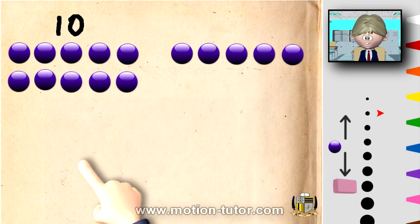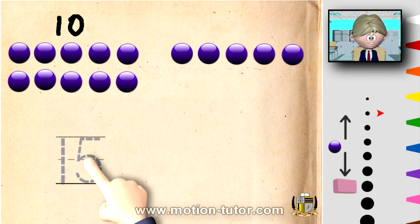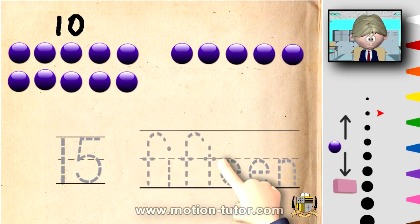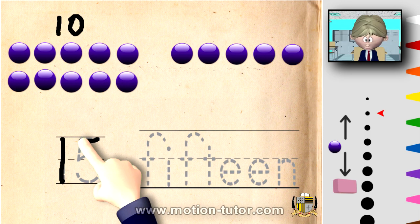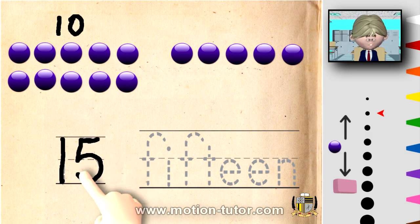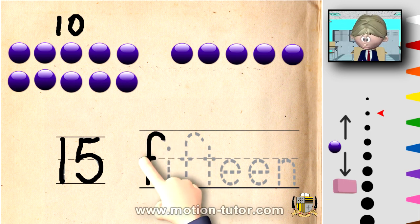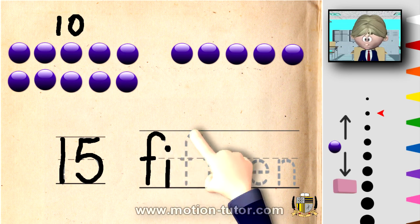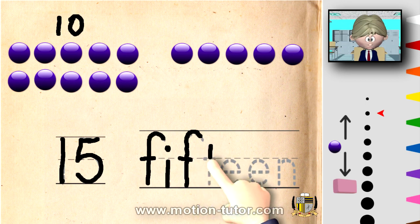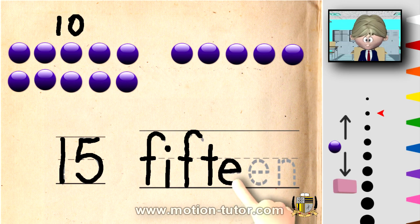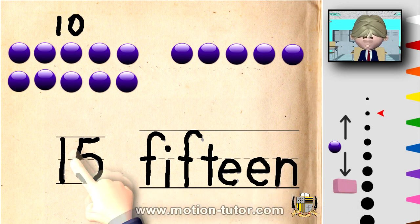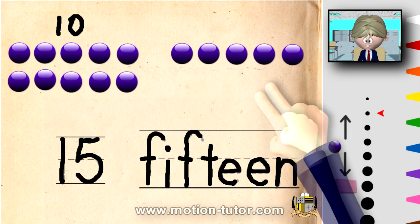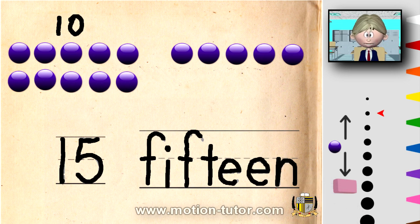And fifteen looks like this. And we spell it like that. So let's trace this one. It's a one and a five. And it's spelled F, I, F, T, E, E, N. Ten and five is fifteen. We will stop here and we will continue with more numbers up to nineteen in the next video.